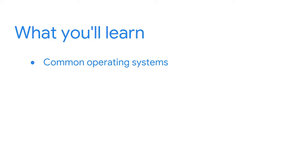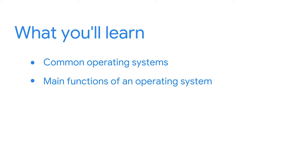How many times a week do you use a computer? For some of us, the answer might be a lot. There are incredible machines that let us do everything from using specialized applications when completing a task at work, to sending emails to loved ones in a distant place. Have you ever thought about how computers can do all of this? Well, that's where operating systems come in. In this section, we'll learn about common operating systems and explore the main functions of an operating system.